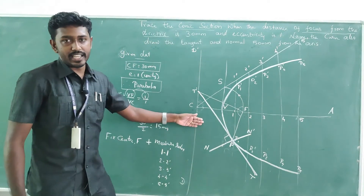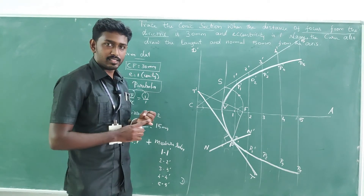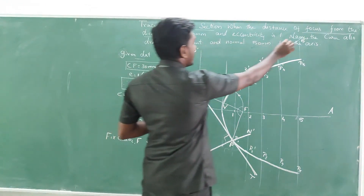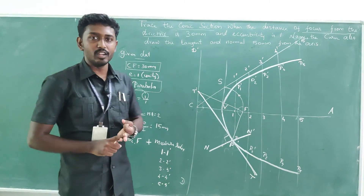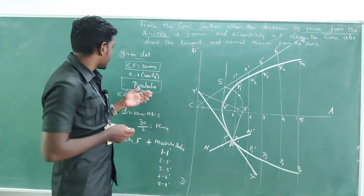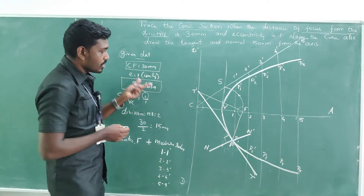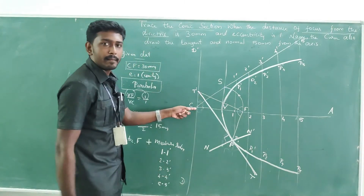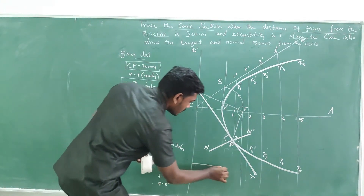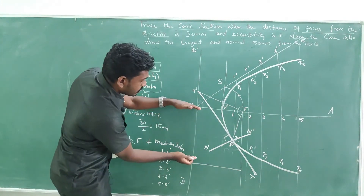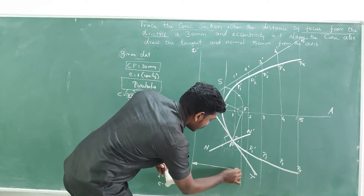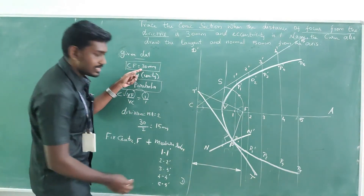You have completed the drawing. Now for dimensioning: we have measurement CF = 30. From point C, drop a perpendicular projection line, and from the focus drop a perpendicular projection line. Draw a dimensioning line parallel to CF with filled arrowheads at both ends and write 30 above the line.